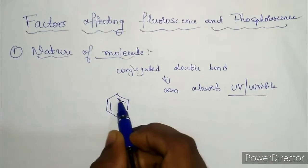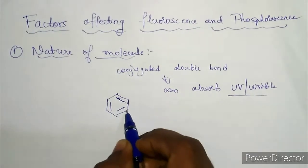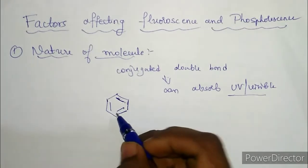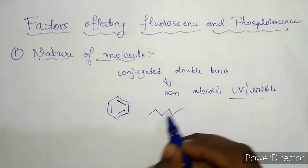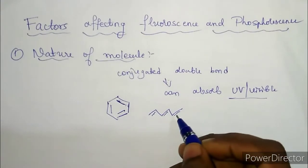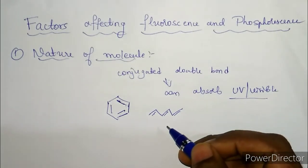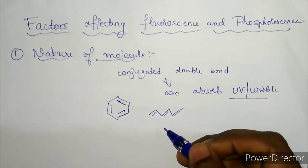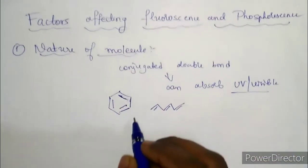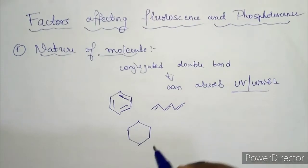If you consider benzene, you can see double bonds present alternately — this is a double bond, this is a single bond, this is a double bond — and this system is called a conjugated system. Similarly, other compounds with conjugated double bonds are capable of absorbing UV or visible radiation and hence can show fluorescence and phosphorescence.